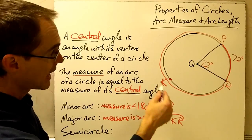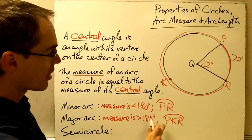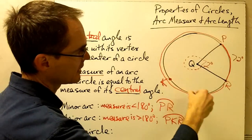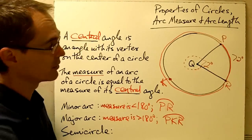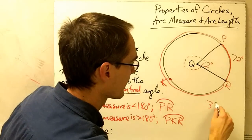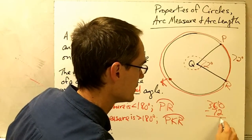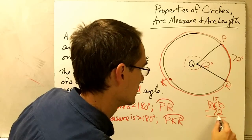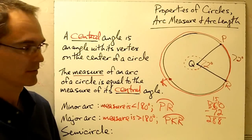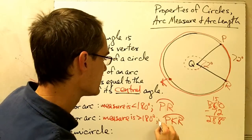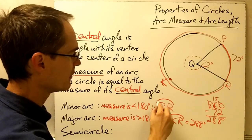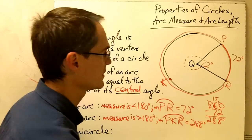I would label that arc using three letters and that little curvy symbol over the top which means arc. So this is arc PKR. Since the entire circle is 360 degrees and the central angle is 72 degrees, the rest must be 360 minus 72, which is 288 degrees. So the measure of arc PKR would be 288 degrees. The measure of arc PR equals 72 degrees.